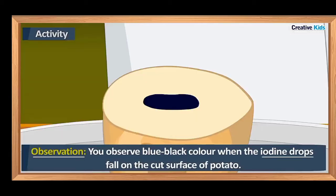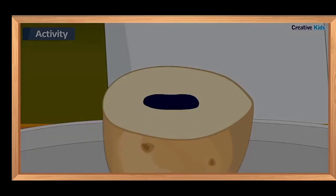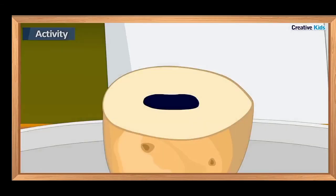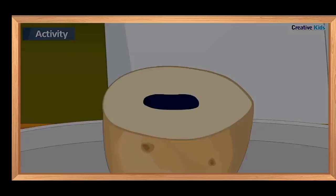You will observe a blue-black color when the iodine drops fall on the cut surface of the potato. When you add iodine solution, you observe a blue-black color. This leads to the conclusion that if it becomes blue-black in color, there is a presence of starch.